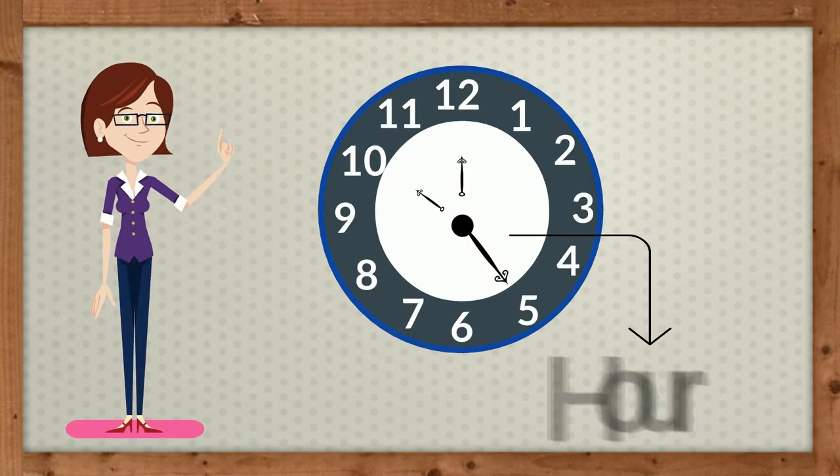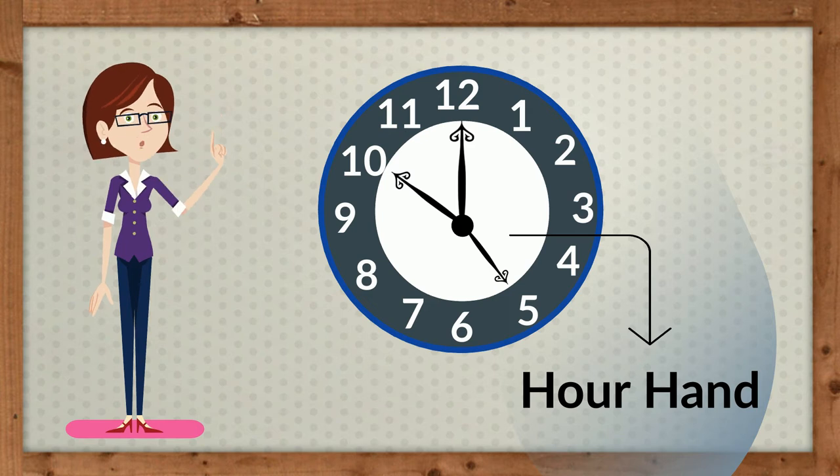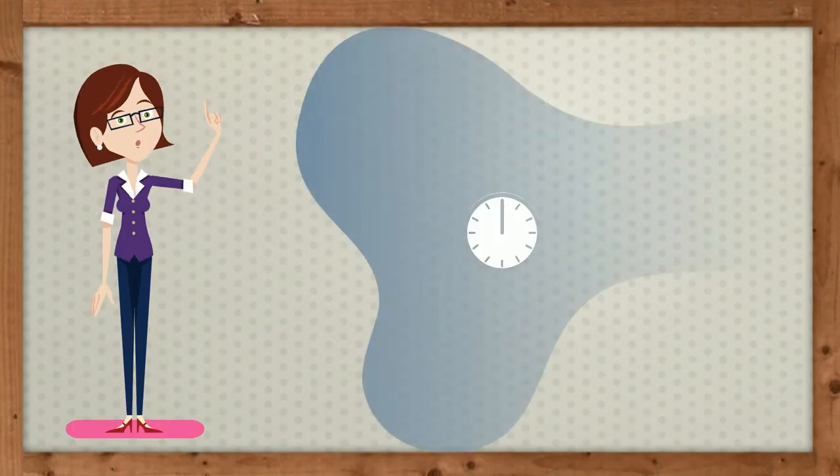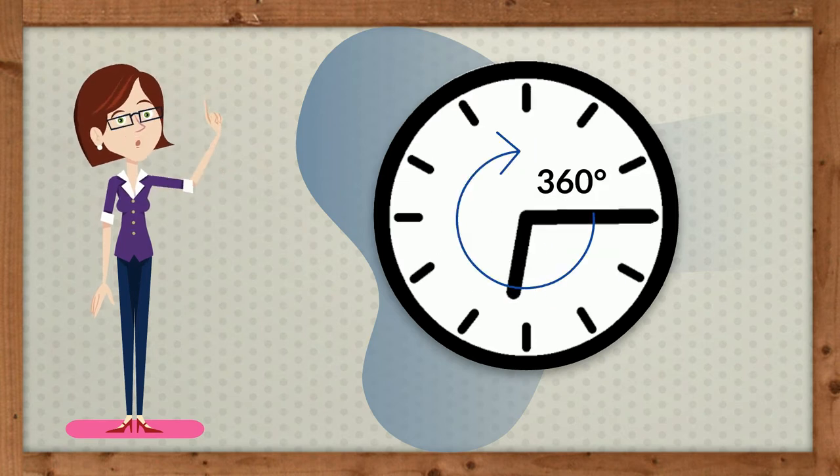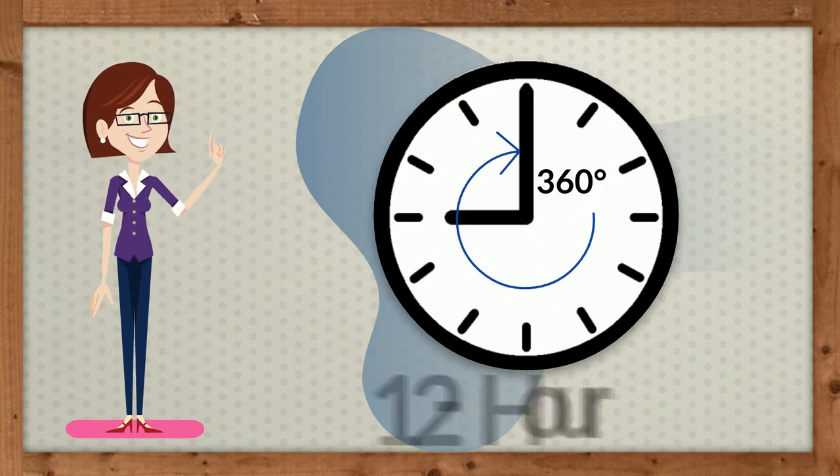The hour hand, the shorter of the two hands, completes one rotation in 12 hours in a normal 12-hour analog clock.